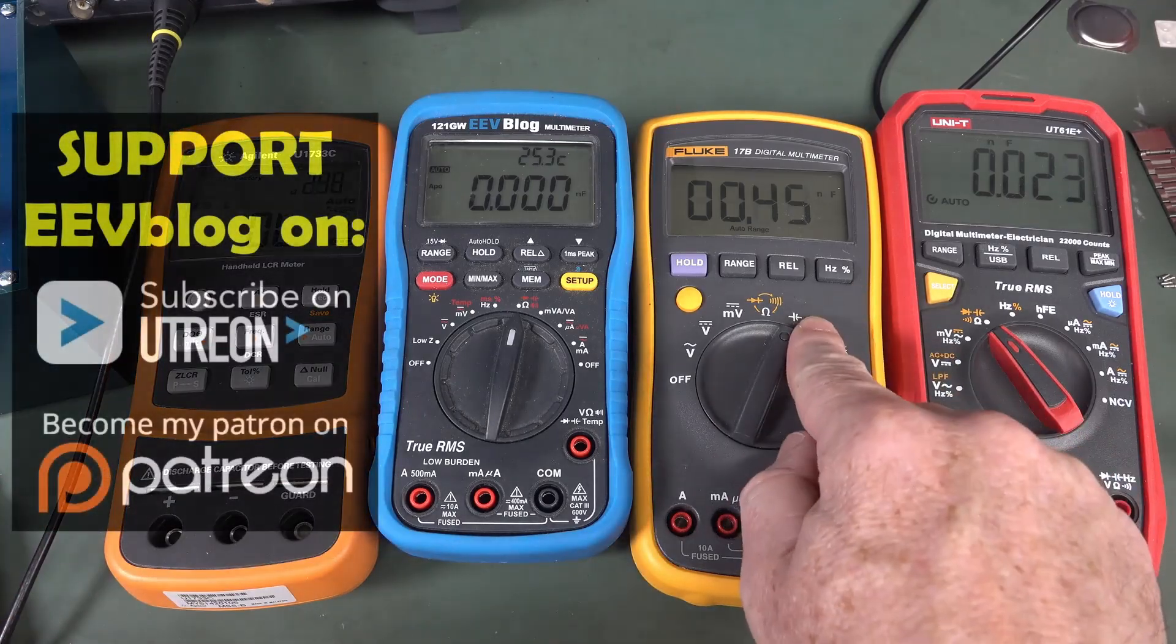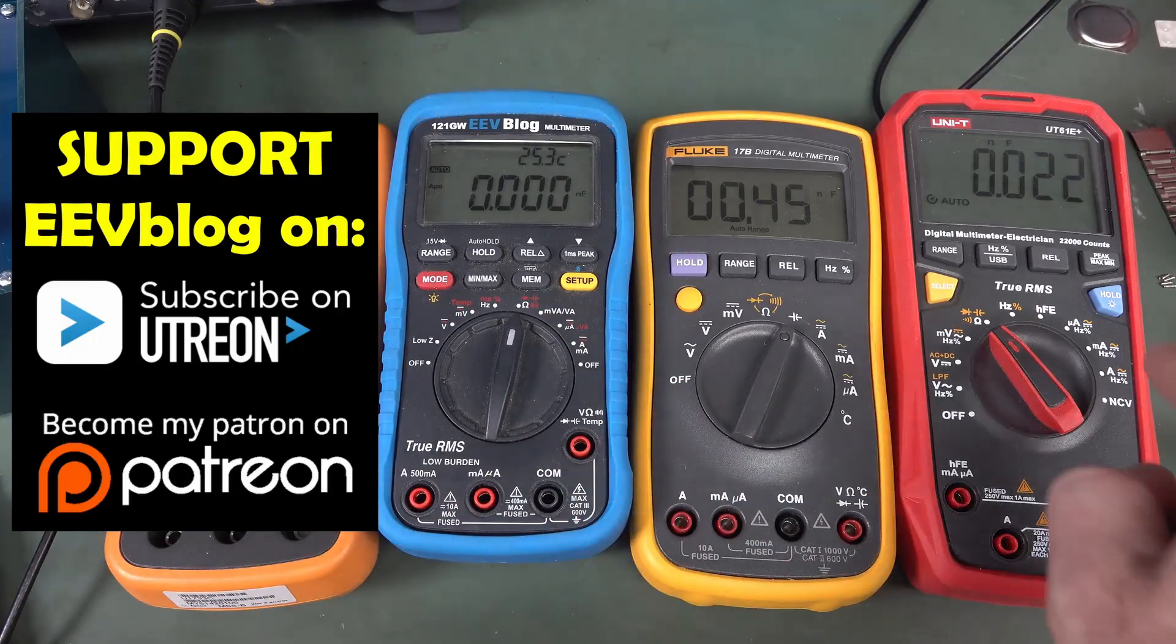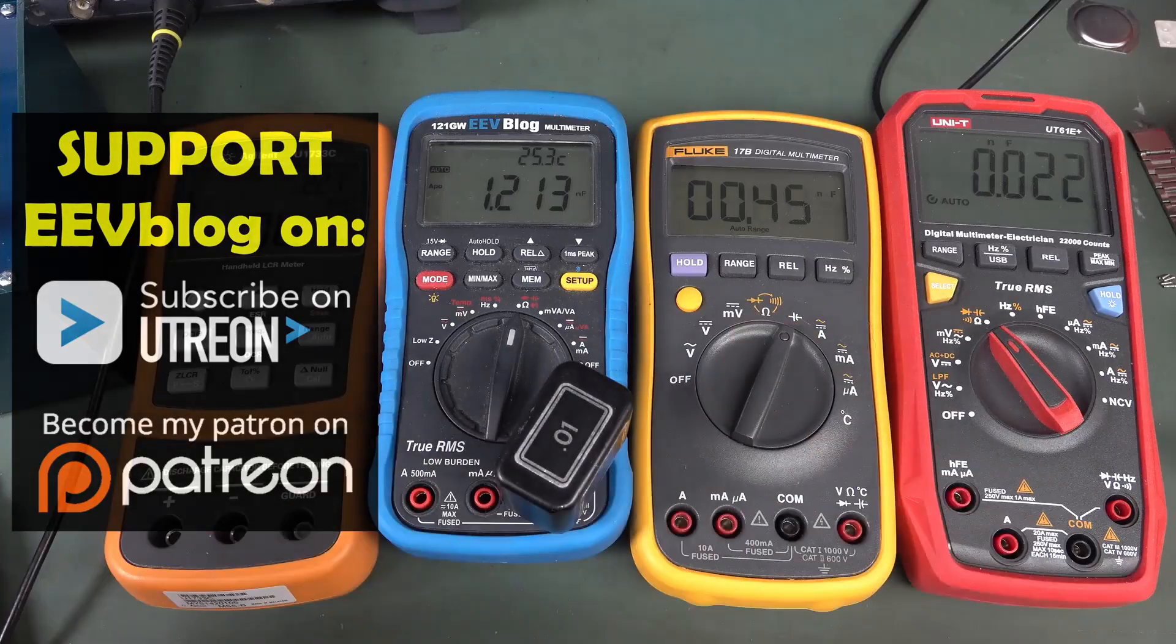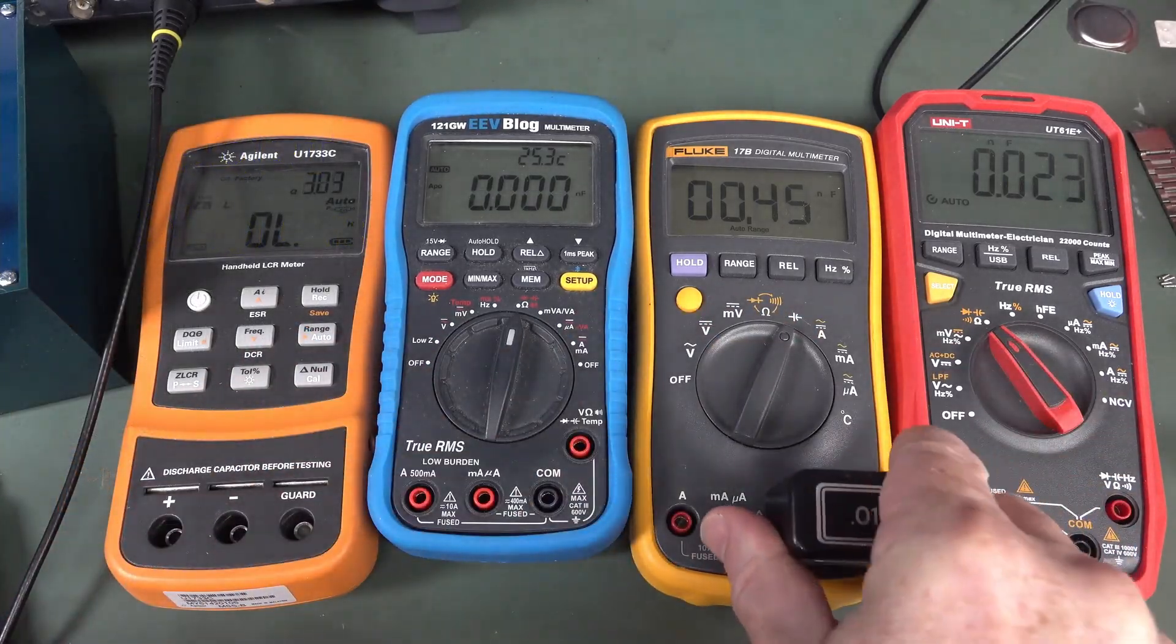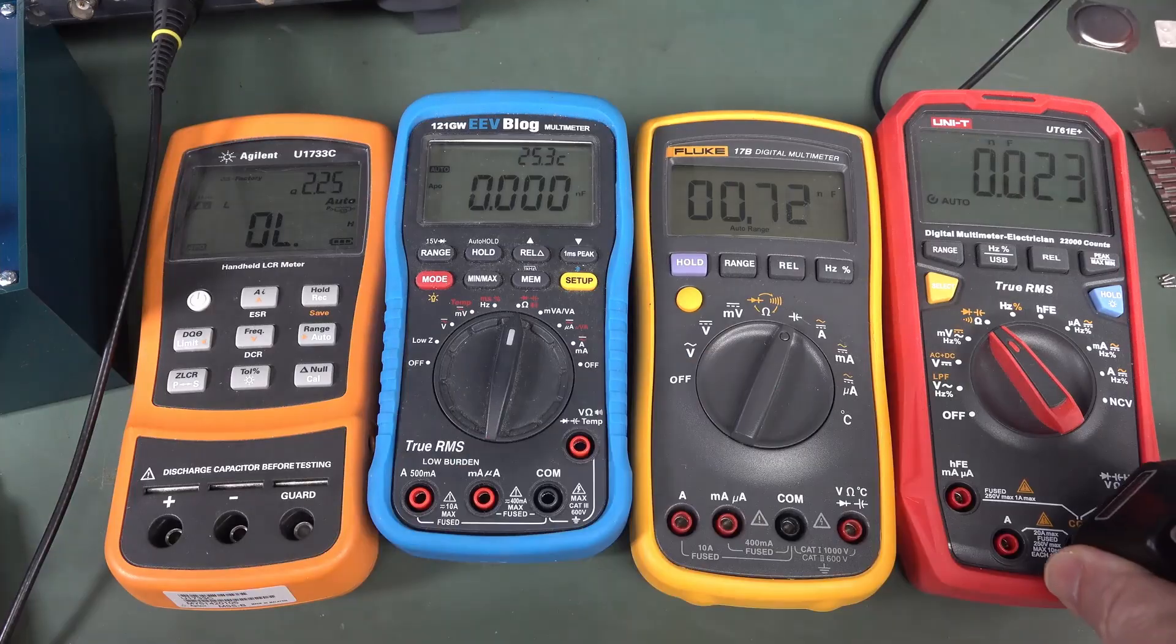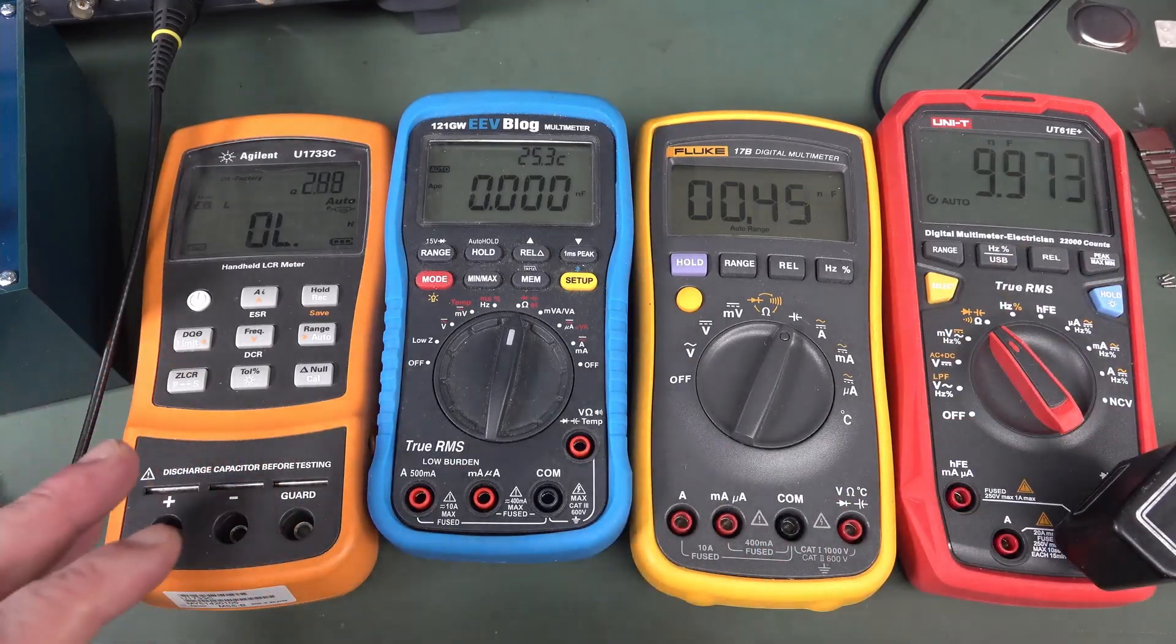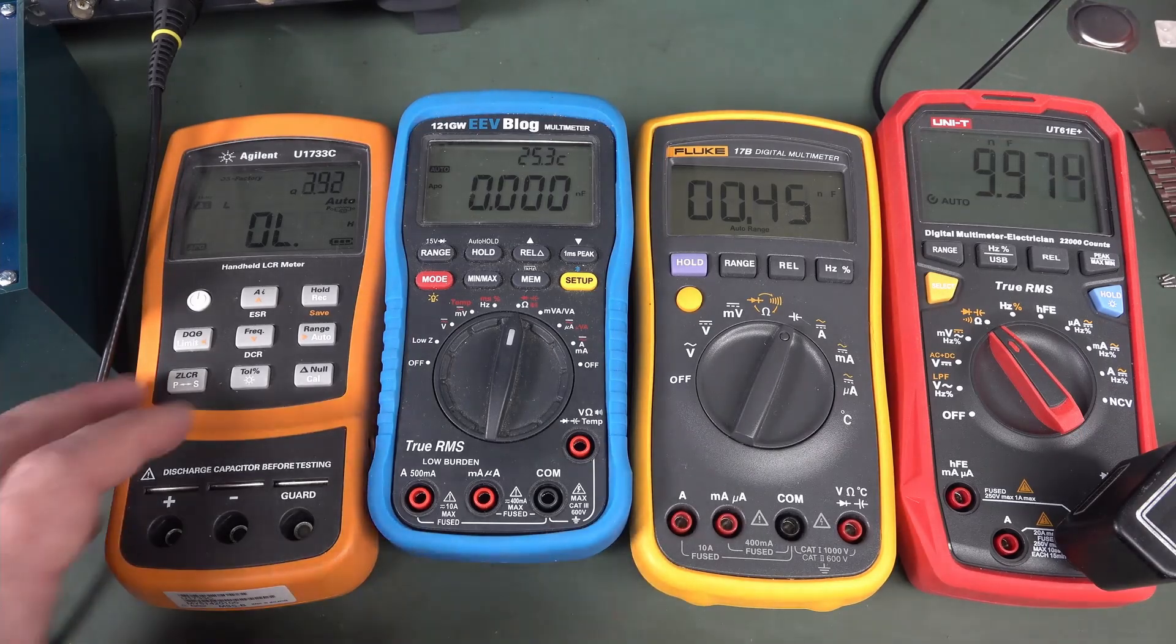Most multimeters these days have a capacitance mode, either single on the dial like that, or switch through, typically on the ohms range like this, and you can measure your cap like that. We've got our 10 nanofarad standard capacitor here, and it measures that. They have reasonable capacitance measurement in them. It's not great, it's usually only like a couple of percent accuracy at best, but it's quite handy.